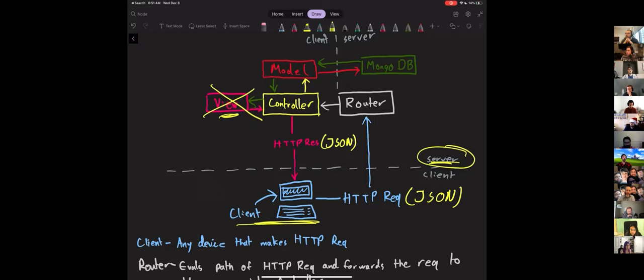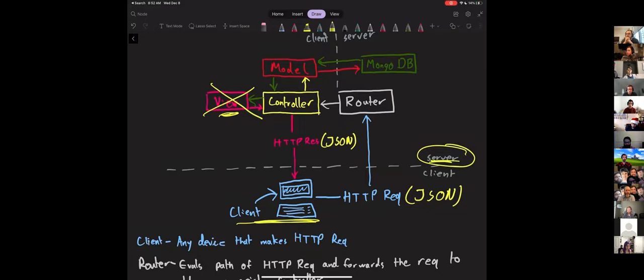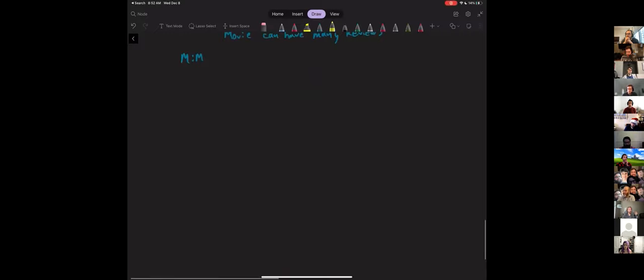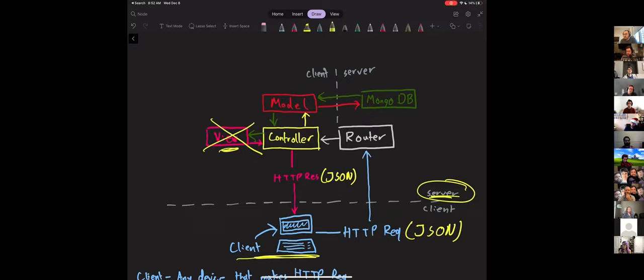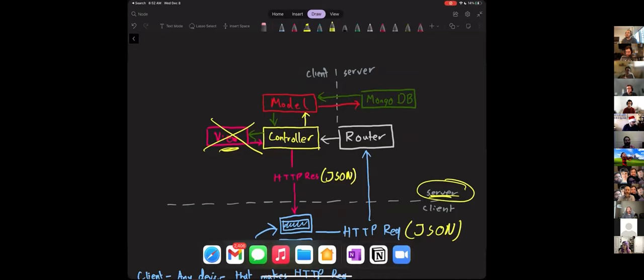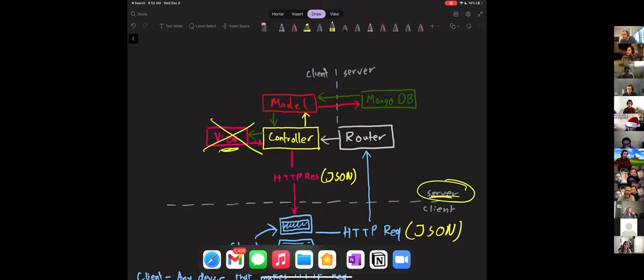We'll build out a more complete view of this a little bit later, but this puts what we're talking about today into perspective — this is where we're going to start. Does anyone have questions about this before we move on? One thing to clarify — if you're putting React on this, it would be where the client's computer is. Yes, exactly — that is the React app.